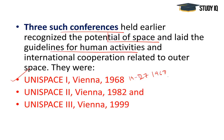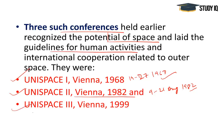UNISPACE II was again held in Vienna in 1982, from 9th to 21st August 1982. Its purpose was to address concerns about how to maintain outer space for peaceful purposes and prevent an arms race in outer space.